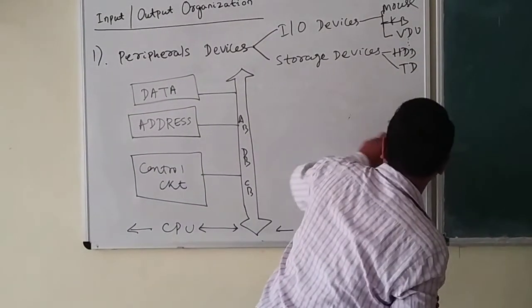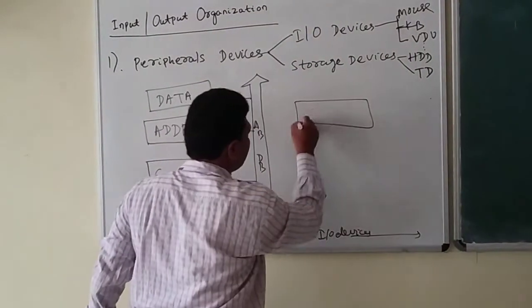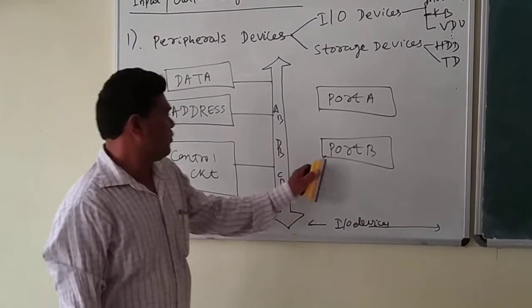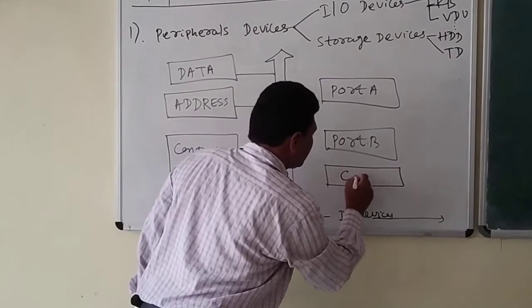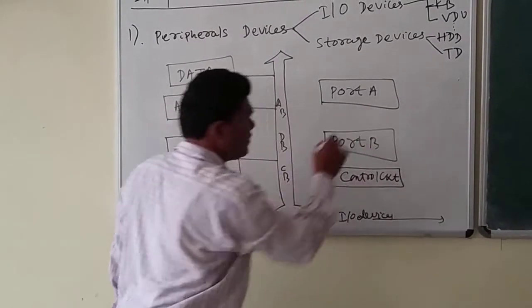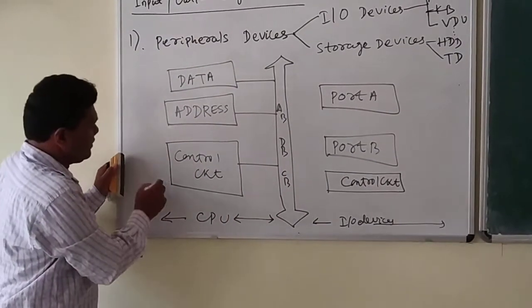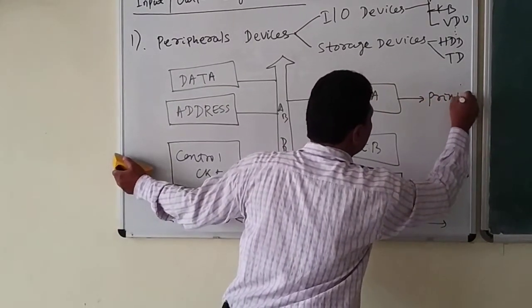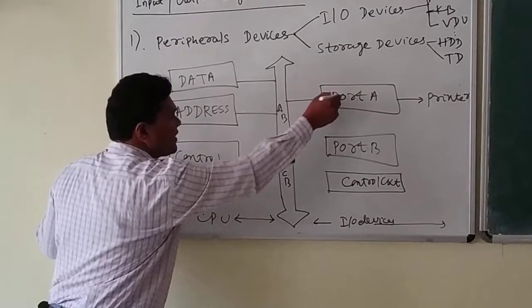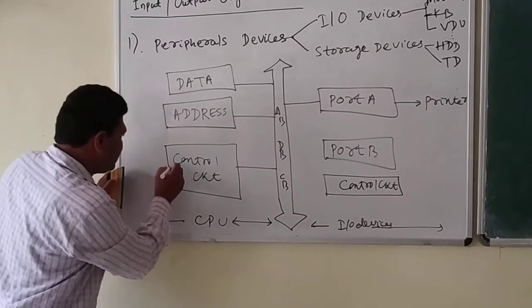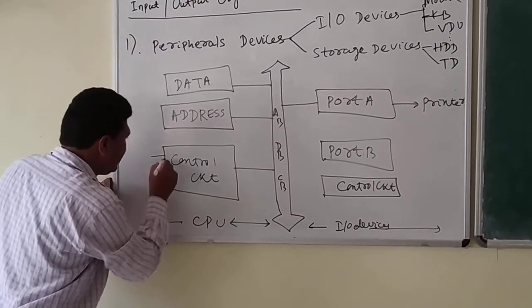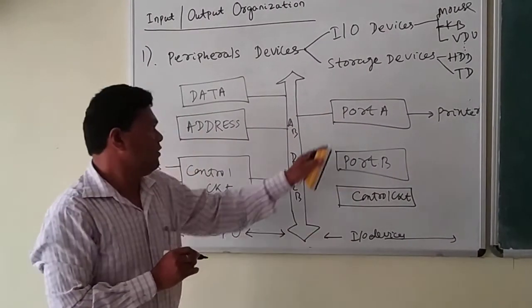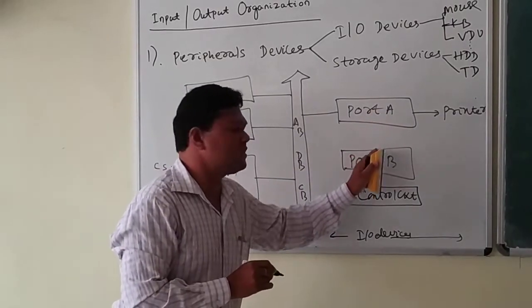The control circuit manages these two ports. When the CPU wants to address one device through a port, a control circuit containing chip select and register select lines (RS0 and RS1) is used. When the chip is selected, the CPU can perform operations on the ports. If RS0 and RS1 are both 0, port A is activated, meaning the CPU can output data to the printer connected there.